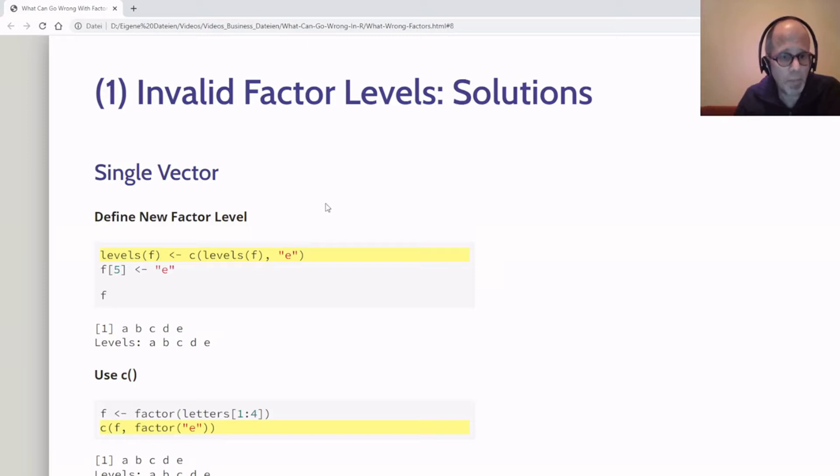For the first case, a single vector, we have to make sure the new entry we want to add is defined as a level. One solution is to explicitly define the levels. There's a levels function in base R—I can use the existing levels of F and add a new level E. Note that this highlighted line of code doesn't actually change the contents of F, it just defines a new factor level. Then in the next line I can add the element E in fifth position and now it works as expected. I've got A, B, C, D, E and the levels are also A, B, C, D, E.